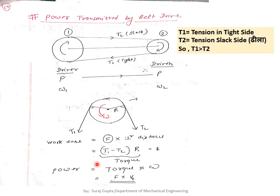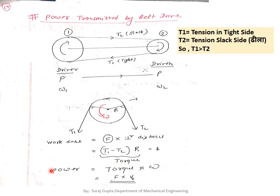Power is defined as the product of torque multiplied by angular velocity: P = T·ω. The torque is (T₁ − T₂)·R, and R·ω equals the linear belt velocity Vb. Therefore, power also equals the resultant force (T₁ − T₂) multiplied by the linear belt velocity. Both expressions — force times linear velocity and torque times angular velocity — give us power.